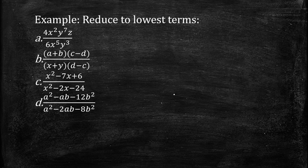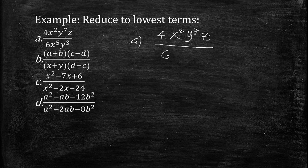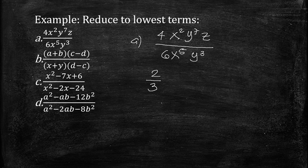Let us have an example — reduced to the lowest terms. Letter A: we have 4x squared y raised to 7, z over 6x raised to 5, y cubed. We can use the exponential method where we divide. 4 over 6 is divisible by 2, giving us 2 over 3. For x, we have x raised to 2 minus 5, and for y, 7 minus 3, since when we divide we subtract the exponents. So this is z.